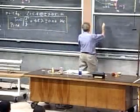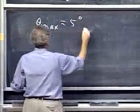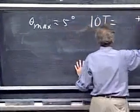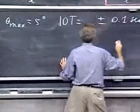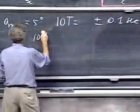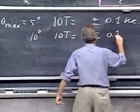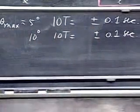So I'm going to get at an angle theta maximum of roughly 5 degrees. I get 10T equals something plus or minus my reaction time, which is 0.1 of a second. And then I will do it from 10 degrees, and I will do again 10T, and again my reaction time is not much better than 0.1 seconds. So let's do that first.